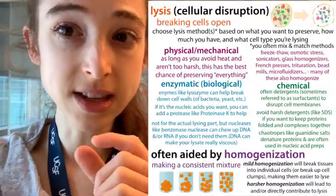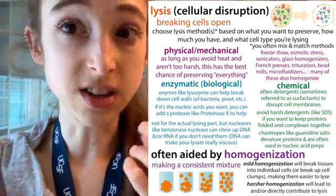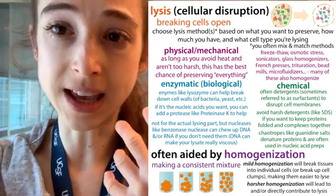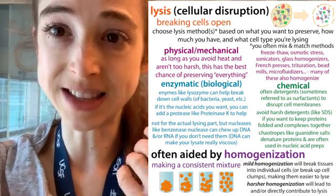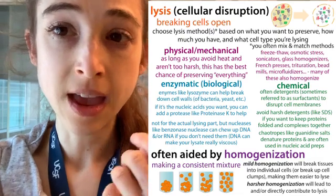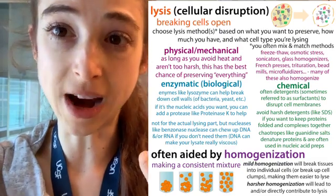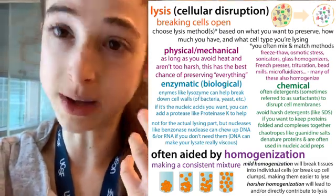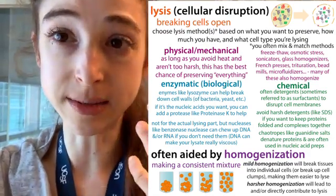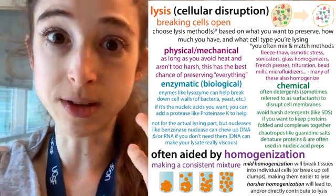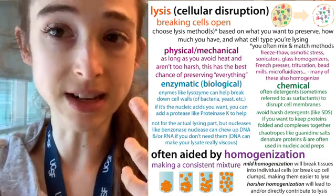Then there are biological methods and chemical methods. Biological methods often involve adding enzymes — things like lysozyme — that will help break down cell walls. Chemical methods involve adding some sort of detergent or other chemical to help break open the cells. Often we use some combination of various types — for example, freeze-thaw in combination with a mild detergent in combination with trituration.